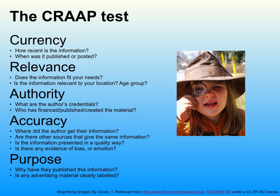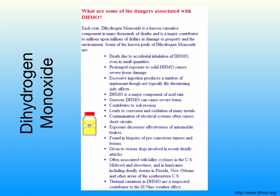So let's have a look at some examples of how we can be fooled by information on the web. This first example is from a website called dhmo.org. Have a look at this page — it asks: what are some of the dangers associated with DHMO? It talks about things like death due to accidental inhalation even in small quantities, prolonged exposure to solid DHMO causing severe tissue damage, and it being given to vicious dogs involved in recent attacks.